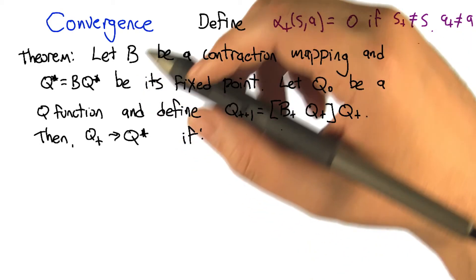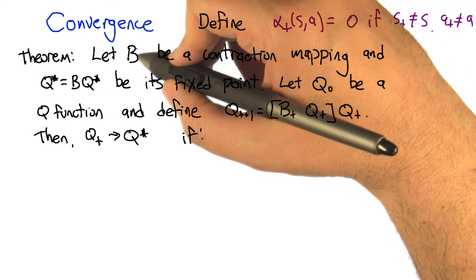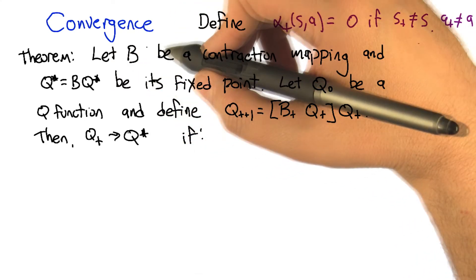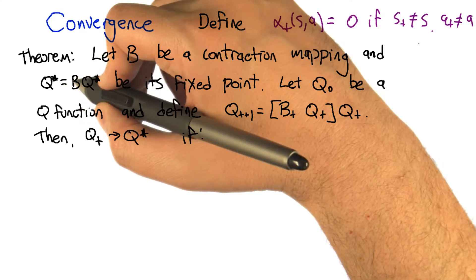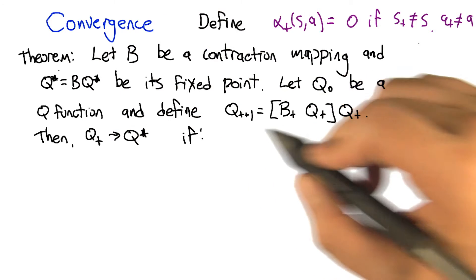This is the beginning of the statement of the theorem. We're going to say B is some contraction mapping—this is going to be the Bellman operator ultimately. Q* = BQ*, that's the fixed point. That's the solution to the Bellman equation.